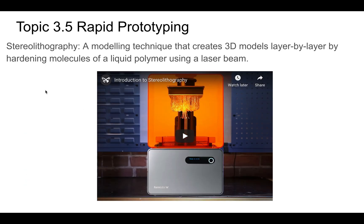This is a manufacturing technique that you need to know - it's called stereolithography. This is an additive process. Essentially what you're doing is shining an ultraviolet laser into resin, and at a specific point it will harden. Then you pull it out of the material. This video is a little old - about five years - but it's a really good introduction to what they're actually doing with this type of manufacturing process.